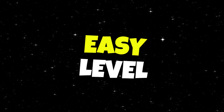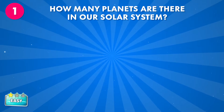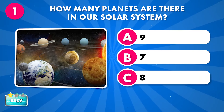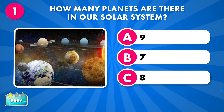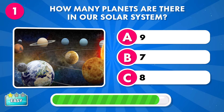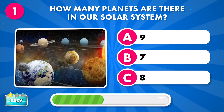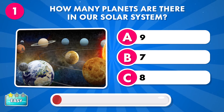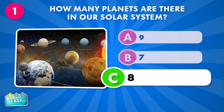Let's start with easy levels. How many planets are there in our solar system? A: 9, B: 7, C: 8. It's eight.